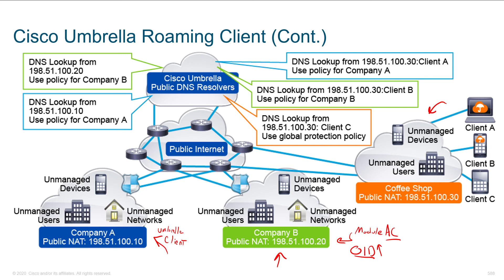If somebody doesn't have that unique agent installed and we don't know where they're coming from, we can still protect them, but we use what's called a global protection policy. The threat intelligence is constantly updated and we know where hostile things are, but we're not doing anything special because we don't really know who you are, so we can't apply a company-specific policy. Use the Roaming Client or the AnyConnect plugin to get the most out of your Cisco Umbrella installation.